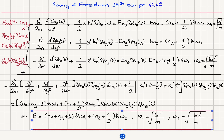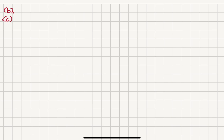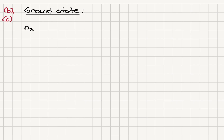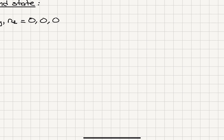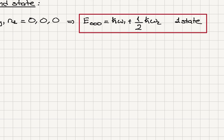Now let's find the ground state energy and the first excited state, combining parts b and c. For the ground state, the combination nₓ = 0, n_y = 0, n_z = 0 gives the lowest possible energy: E(0,0,0) = ℏω₁ + (1/2)ℏω₂. There is only one combination of quantum numbers that gives this answer, so there is only one state.